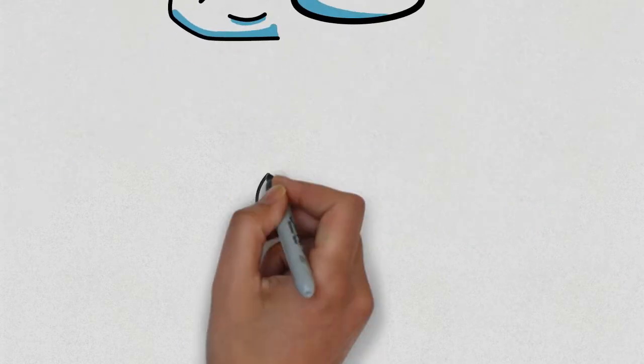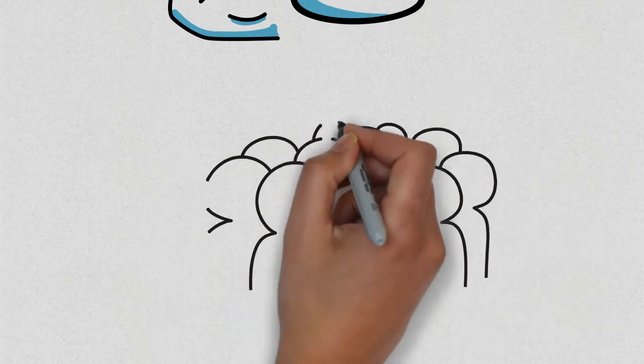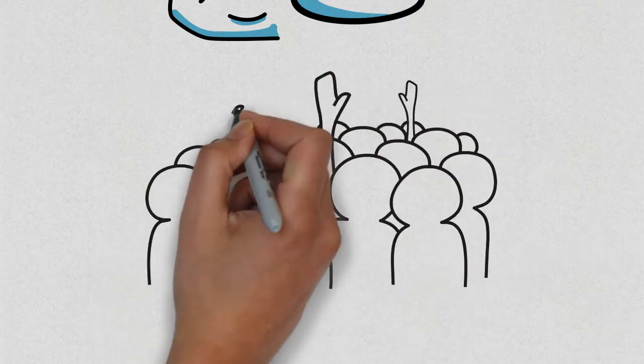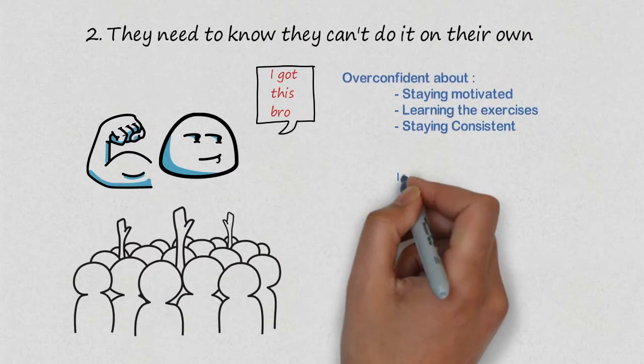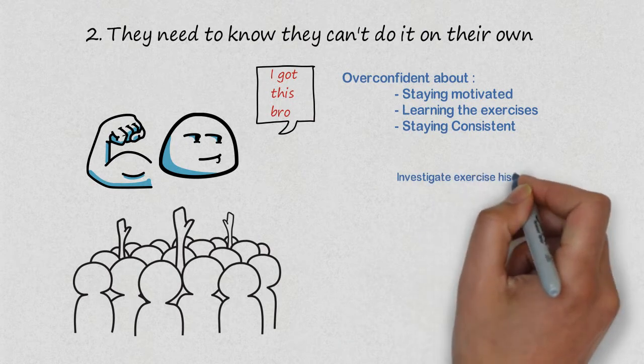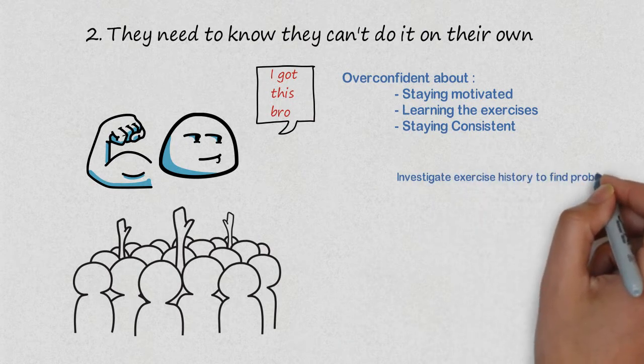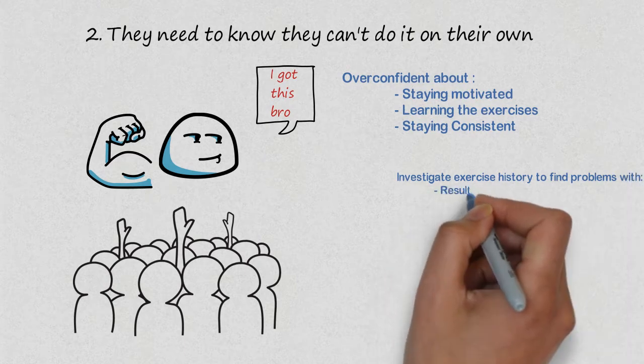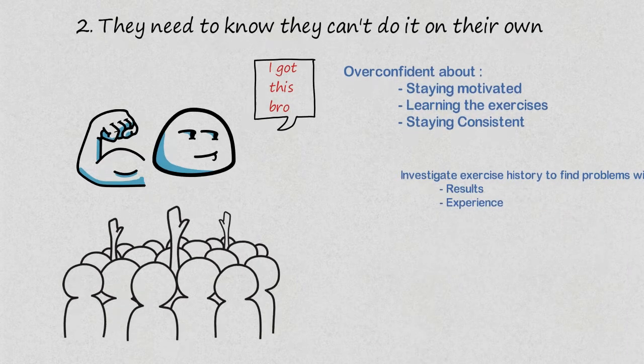If you are a good trainer, you'll have seen hundreds of people, if not thousands of people who've made this mistake. The way around this is to investigate the individual's exercise history and see if you can help them find problems with either the results that they've had or with the experience that they've had.